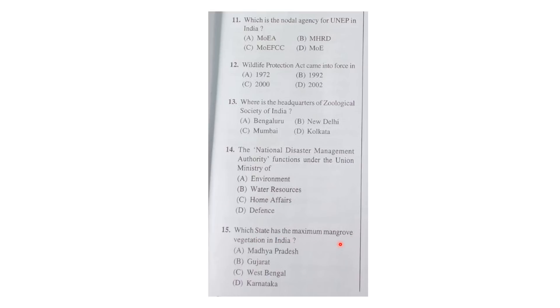The fifth question was: which state has maximum mangrove vegetation in India? If you have followed my current affairs video about forest cover in India, I discussed this exact question there — the link will be in the description. The correct answer was Gujarat.